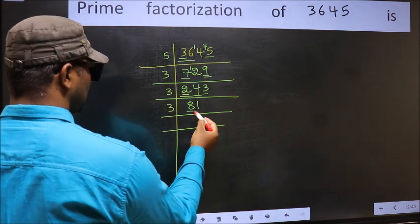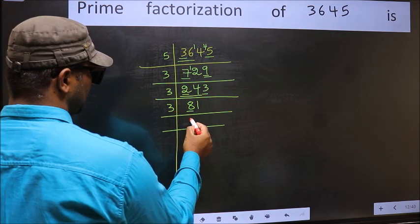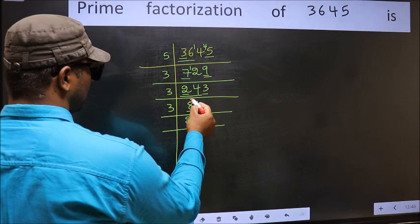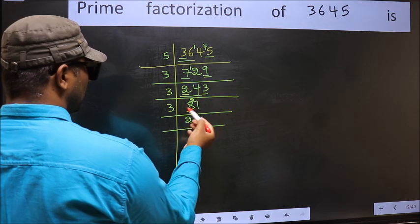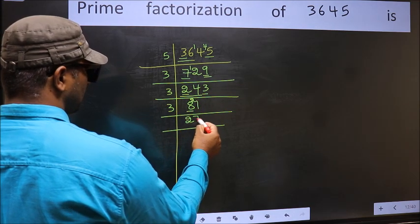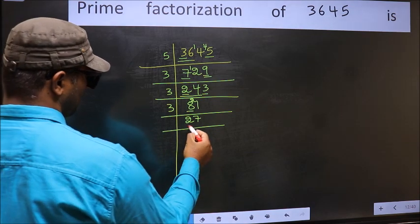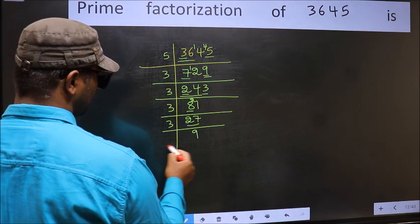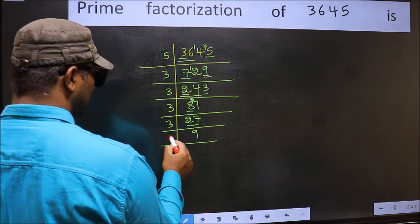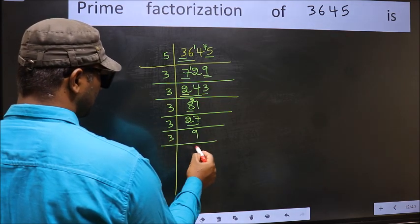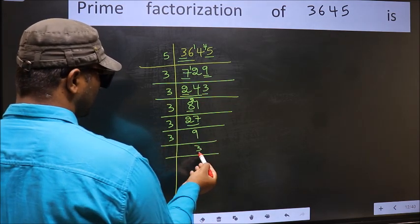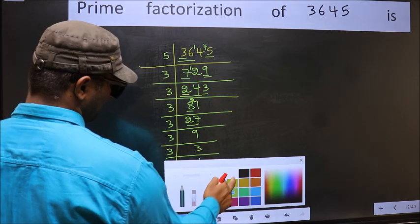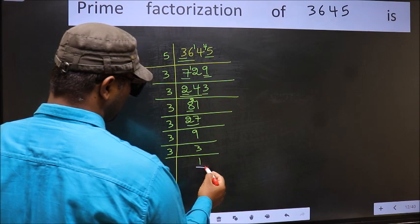Now to check whether this is divisible by 3 or not. Add the digits: 8 plus 1 equals 9, and 9 is divisible by 3. So this number is also divisible by 3. So take 3 here. First number 8; a number close to 8 in the 3 table is 3 twos = 6. 8 minus 6 is 2, carried forward: 21. When do we get 21 in the 3 table? 3 sevens = 21. Now we have 27; 27 is 3 nines = 27. Now we have 9; 9 is 3 threes = 9. Now we have 3; 3 is a prime number, so 3 ones = 3. So we got 1 here.